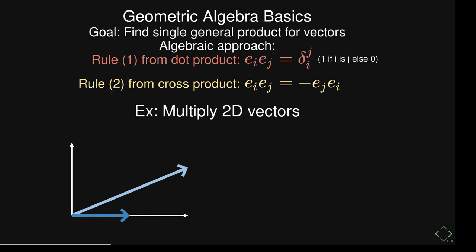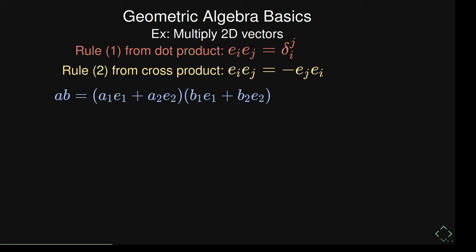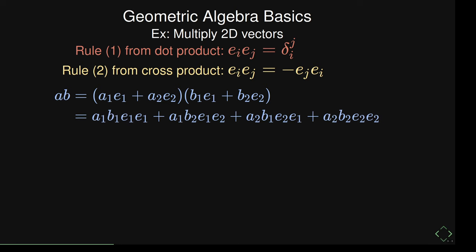Let's try an example. Multiply two two-dimensional vectors a and b. We write down a times b and multiply part by part, applying the rules. Applying the first rule to E1·E1 gives one, leaving a1·b1. Applying the first rule to E2·E2 gives one, leaving a2·b2. We're left with a scalar part, plus two other parts. For the E2·E1 term, we apply the second rule — swapping the basis vectors picks up a minus sign.